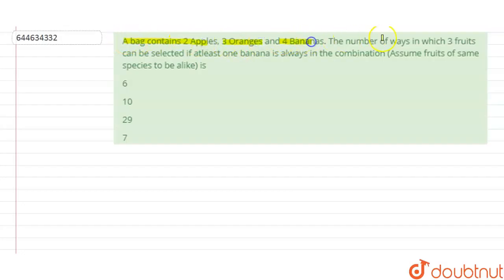Question is: A bag contained 2 apples, 3 oranges, 4 bananas. The number of ways in which 3 fruits can be selected if at least one banana is always in the combination. Assume fruits of same species should be alike. These are our options.